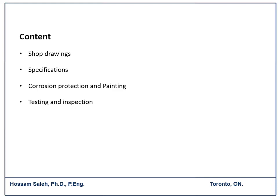In this video I'm going to speak about the following topics: shop drawings, specification, corrosion protection, painting, testing and inspection. Let's start with shop drawings. There are different types of drawings created for any construction project — architectural drawings, mechanical drawings, electrical drawings, and also structural drawings.